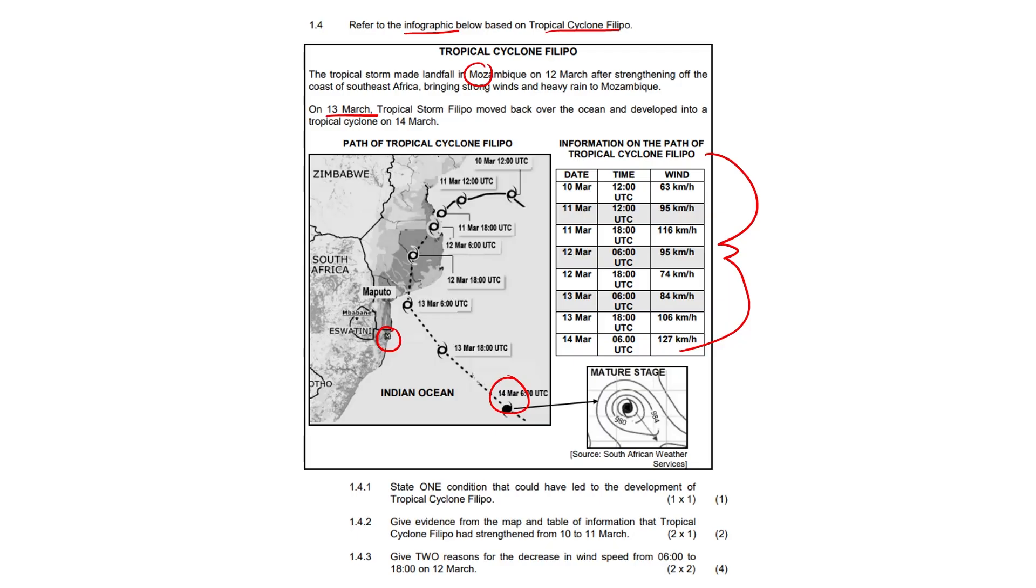So state one condition that could have led to the development of tropical cyclone Filippo. Nice Portuguese name there, almost Filippo, because Mozambique was colonized by the Portuguese and they just left their language there.